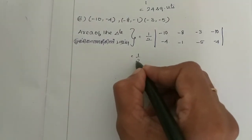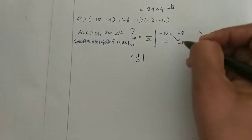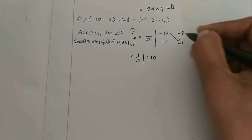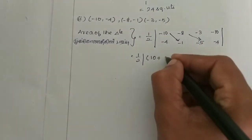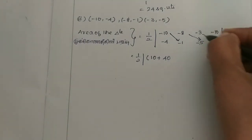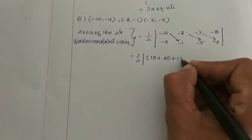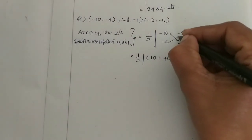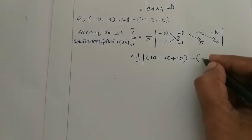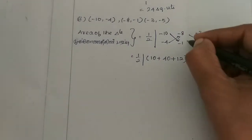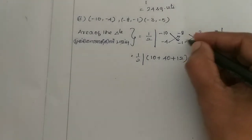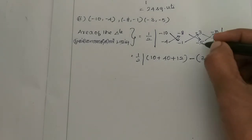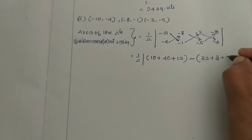So, half into: minus 10 into minus 1 — minus into minus plus — 10 into 1 is 10. Minus 8 into minus 5 — minus into minus plus — 8 times 5 is 40. Minus 3 into minus 4 — minus into minus plus — 3 times 4 is 12. Then minus 8 times 4 is 32. Minus 1 into minus 3 — minus into minus plus — 1 times 3 is 3. Minus 5 into minus 10 — minus into minus plus — 10 times 5 is 50.